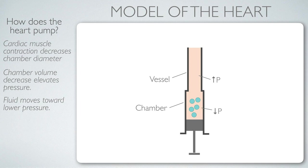Some animals function this way, propelling blood in one direction and then pulling it back — bidirectional flow. Small animals may get away with that kind of circulatory system. We, however, have unidirectional flow, which is more efficient, and our large bodies appear to require it. So how do we achieve unidirectional flow? The valves provide one essential ingredient.